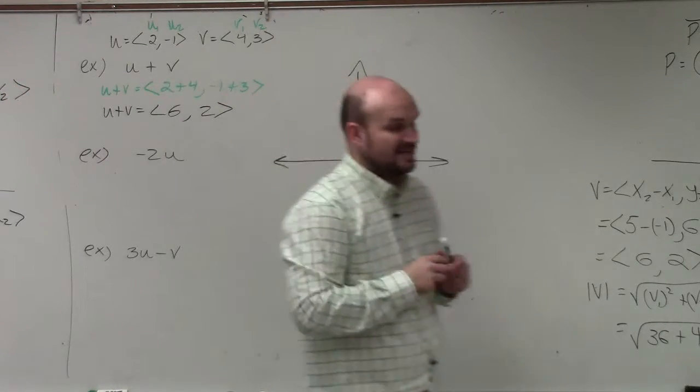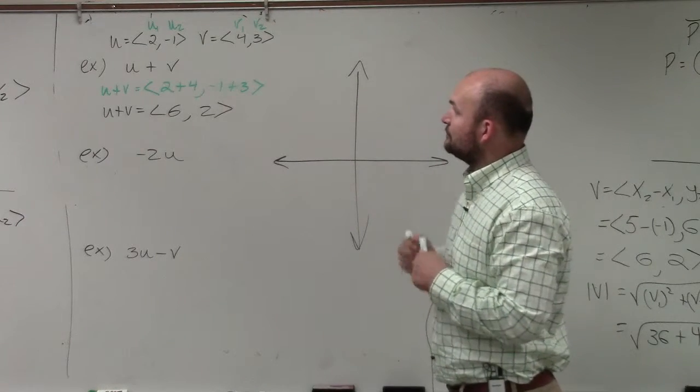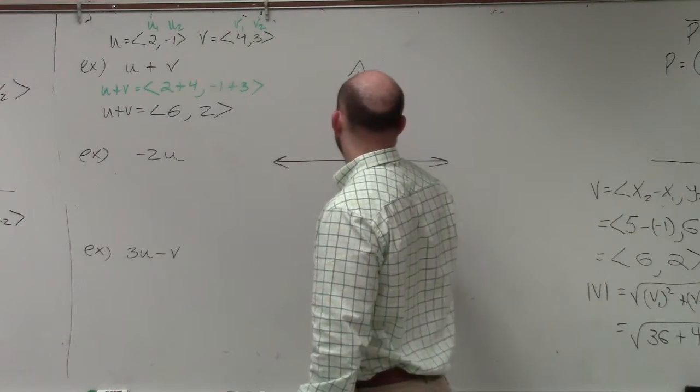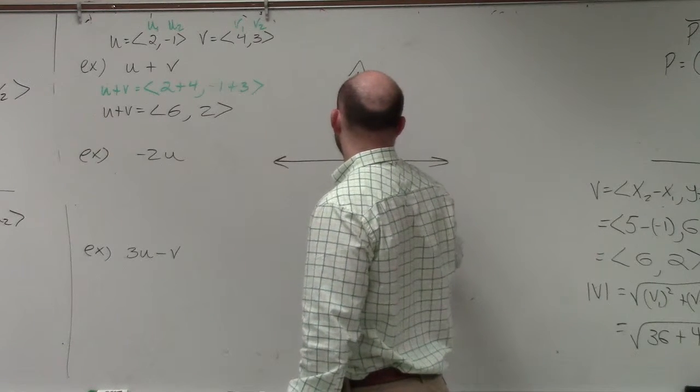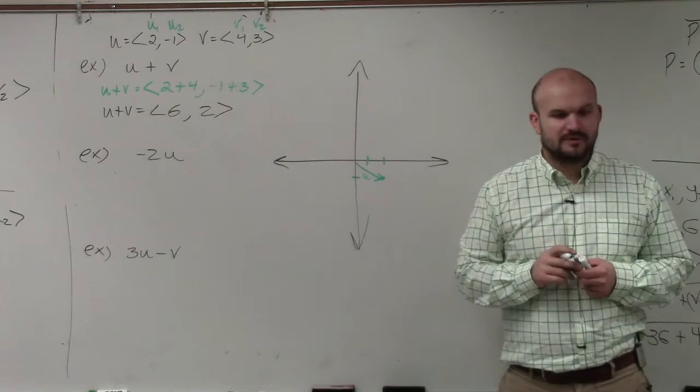All right, so now the next thing I asked you guys to do was to simply graph this. So if I was going to graph my vector u, graph your vector u would look like this. 1, 2, negative 1. Does everybody agree with me in vector u?